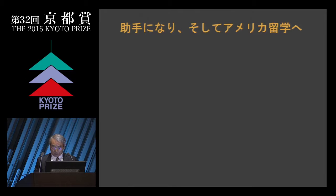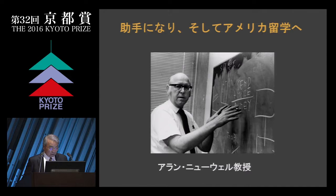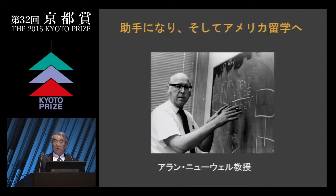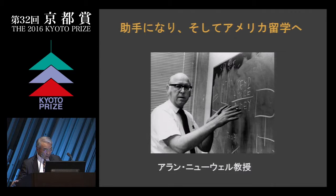After graduating from graduate school in 1973, I got a job as assistant at Kyoto University. Then one great person visited who influenced me greatly later — Professor Alan Newell of the Department of Computer Science at Carnegie Mellon University, one of the fathers of artificial intelligence. We demonstrated our own research, and I said to the professor that I wanted to visit the United States. So one year, starting from 1977, I was invited as a visiting researcher at CMU because of his kindness.